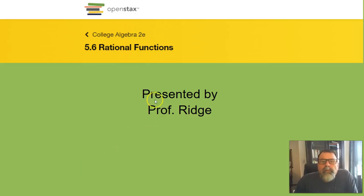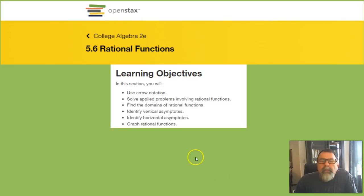Welcome. This is Professor Ridge in today's lesson 5.6, Rational Functions. Our first learning objective is to use arrow notation.